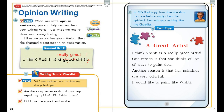Let's look at Jill's final copy, and let's look for how she shows that she feels strongly about her opinion. Then you're going to edit your writing using the checklist on the bottom of page 44.